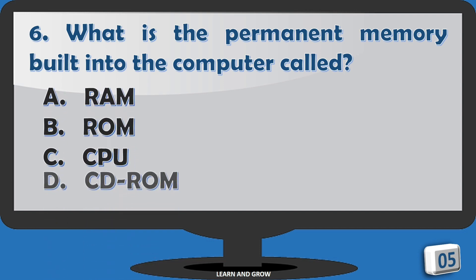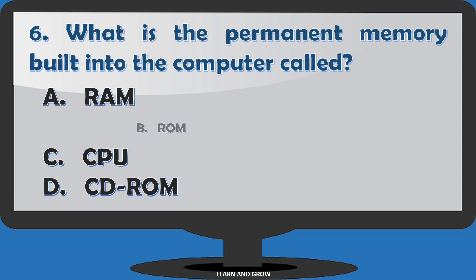Options are: A. RAM, B. ROM, C. CPU, D. CD-ROM. The right answer is option B, ROM.